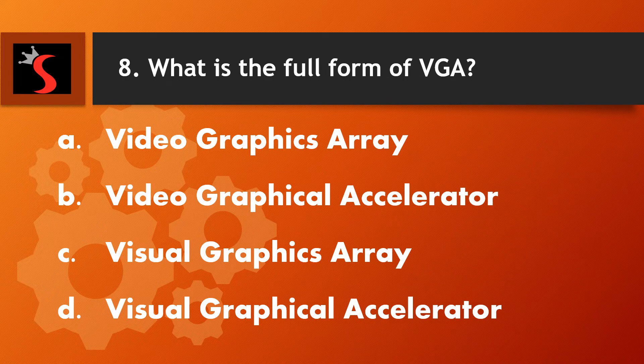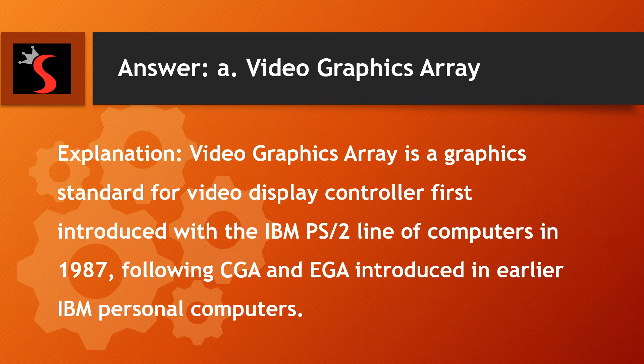The eighth question is: what is the full form of VGA? A. Video Graphics Array. B. Video Graphical Accelerator. C. Visual Graphics Array. Or D. Visual Graphical Accelerator. The right answer is Video Graphics Array. Explanation: Video Graphics Array is a graphics standard for video display controllers, first introduced with the IBM PS/2 line of computers in 1987, following CGA and EGA introduced in earlier IBM personal computers.